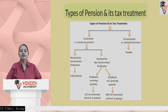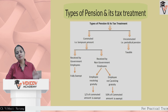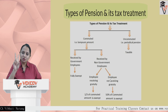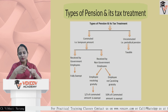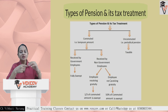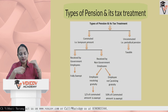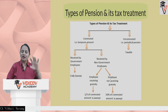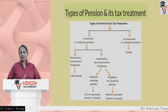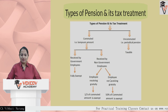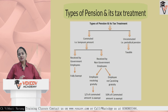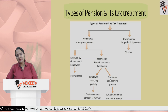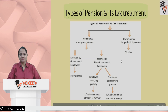Uncommuted pension received periodically is fully taxable. For commuted pension, if received by a government employee it is fully exempt. For non-government employees: if the employee is also covered under the Payment of Gratuity Act, one-third of the commuted amount is exempt — so on Rs. 3 lakh commuted pension, Rs. 1 lakh is exempt and Rs. 2 lakh is taxable. If not covered under the Gratuity Act, 50% is exempt, so Rs. 1.5 lakh is exempt.